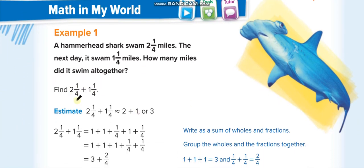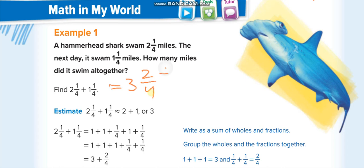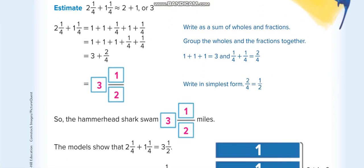How do we add mixed numbers? For example, 2 and 1/4 plus 1 and 1/4. First, add the whole numbers: 2 plus 1 equals 3. Then add the fractions normally: 1/4 plus 1/4 equals 2/4 — only add the numerators, the denominator stays the same. Simplify by dividing top and bottom by 2, giving 3 and 1/2.